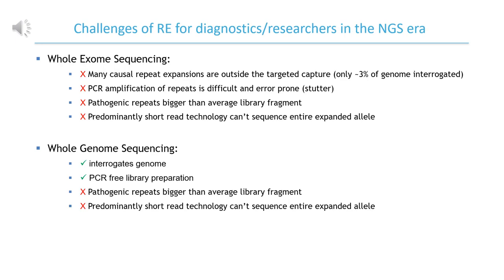We know that whole exome sequencing is the predominant short read diagnostic platform utilised worldwide. It is relatively cheap and mature technology, with computationally low demand. However, in the context of repeat expansions it has several limitations. For example, many repeats are outside the captured regions of the target. PCR is used during the process, which can lead to errors in library preparation. And finally, repeat expansions are actually bigger than the average library insert size, so it is not possible to sequence across the entire repeat.